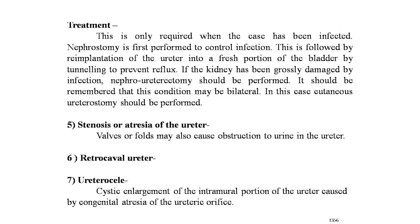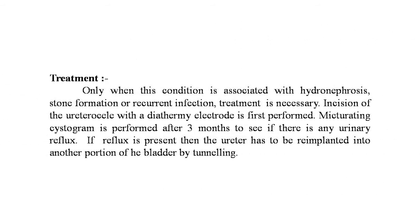The fifth anomaly of the ureter is stenosis or atresia. Walls or folds may also cause obstruction. The sixth anomaly is the retrocaval ureter. The seventh is ureterocele — a cystic enlargement of the intramural portion of the ureter caused by congenital atresia of the ureteric orifice. Treatment is only necessary when associated with hydronephrosis, stone formation, or recurrent infection. Incision of the ureterocele with a diathermy electrode is first performed.